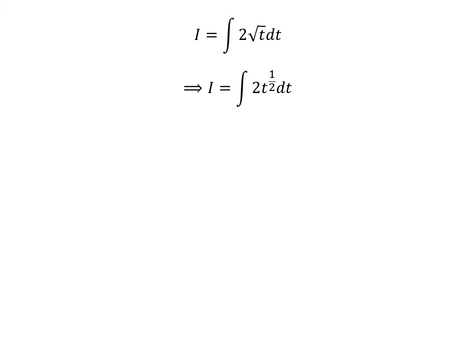To simplify the integral, let us write the integrand in exponent form. So i is equal to the integral of 2 times t raised to the power of one half with respect to t.